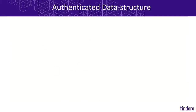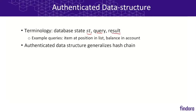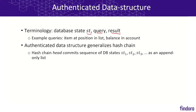A blockchain is an example of an authenticated data structure. Let's define some terminology: we notate the state of a database as ST. A query is a question about the current state — for example, the item at a position in a list or a balance in an account — and the result is the answer. A hash chain is a specific kind of authenticated data structure, which is a binding commitment to a sequence of historical database states.